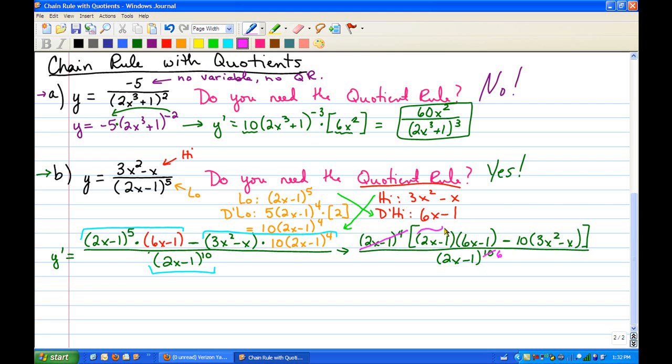Then what you need to do is foil this together, distribute the minus 10 through that set of parentheses, and simplify your answer. So let's see what we get. We have y prime equals,